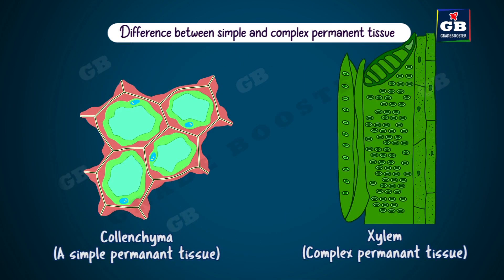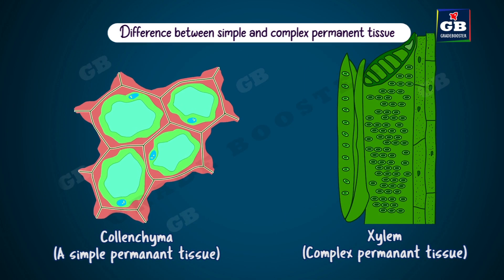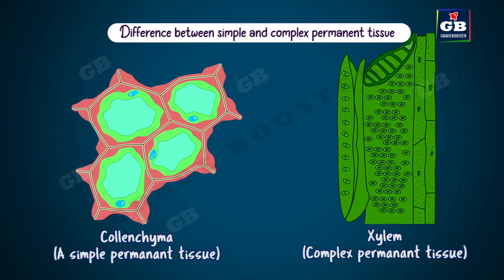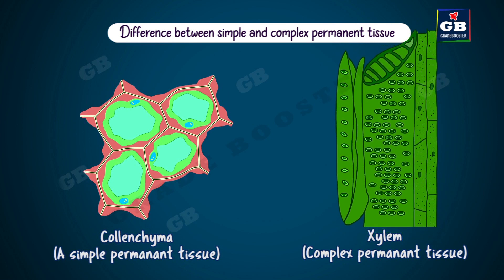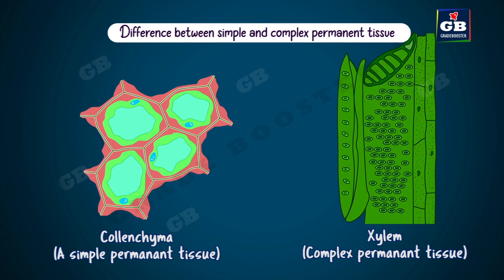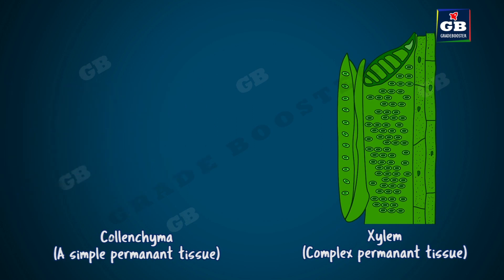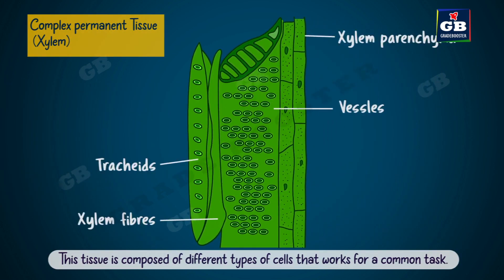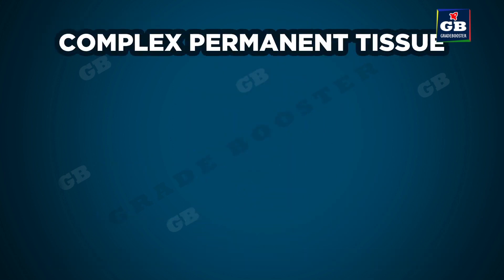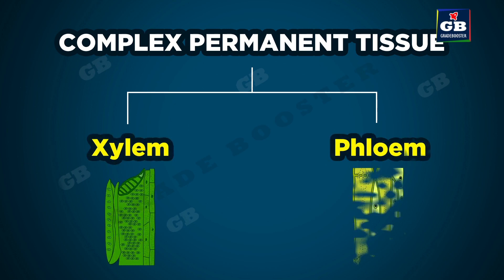Simple permanent tissue is made up of similar kinds of cells, whereas complex permanent tissue is made up of more than one type of cells. Even though different types of cells exist in one tissue, they all work together for a common function. The complex permanent tissues in plants are of two types: xylem and phloem.